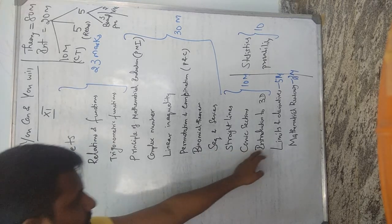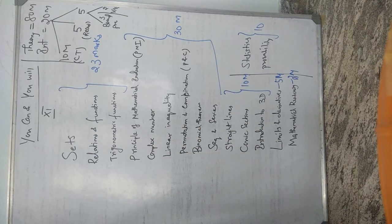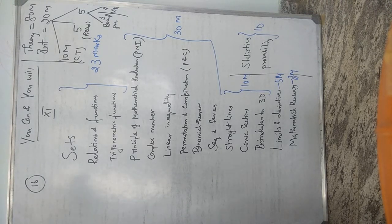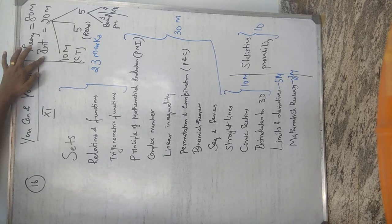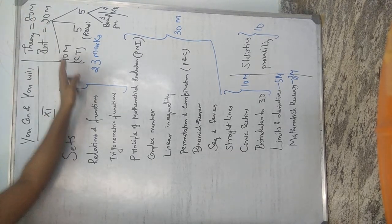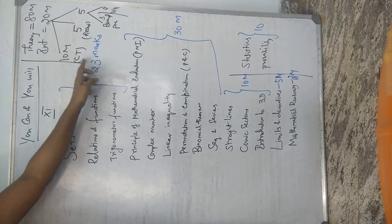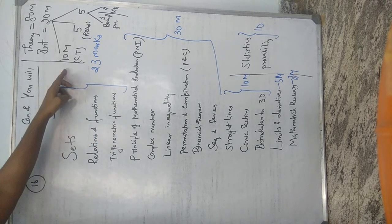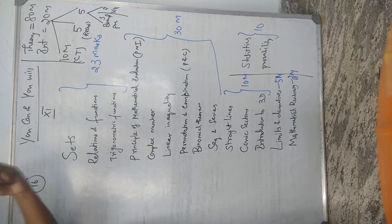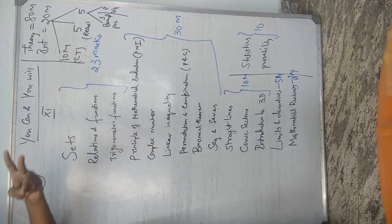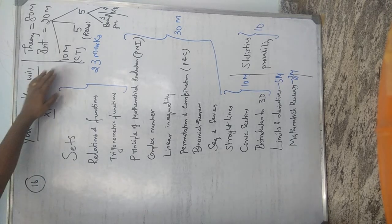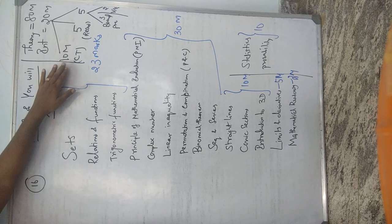The theory exam is 80 marks and internal is 20 marks. The 20 internal marks are divided into three parts: 10 marks for class tests, 5 marks for record/lab activity, and 5 marks for board practical. For the 10-mark class test component, the teacher conducts multiple tests and takes the average of the best two.